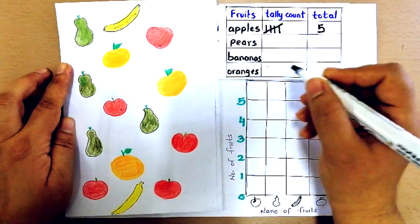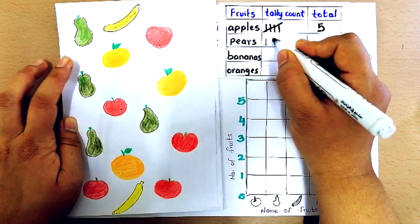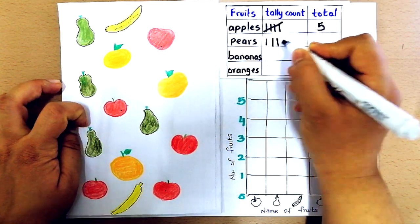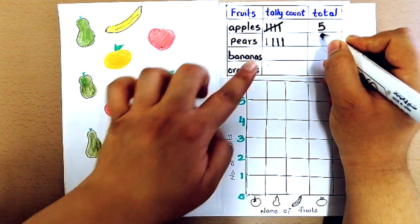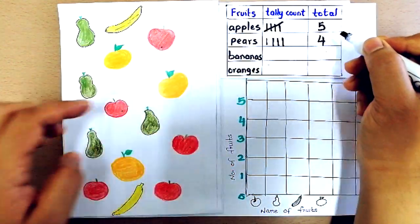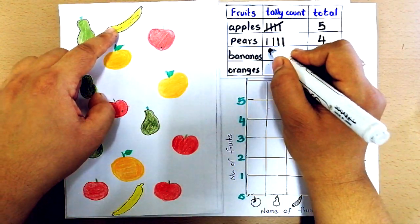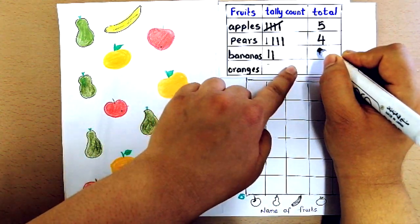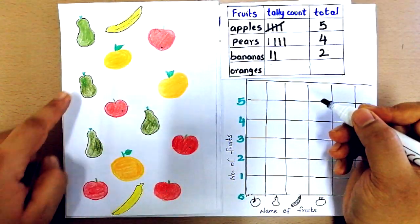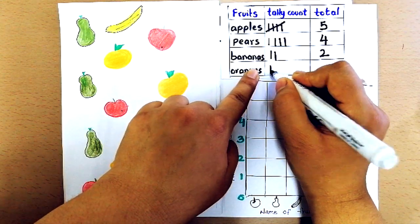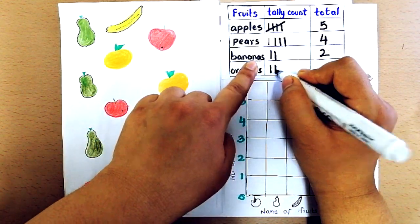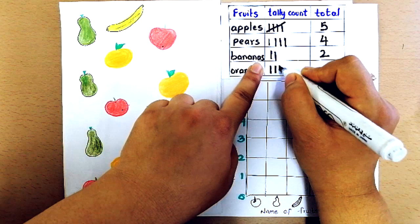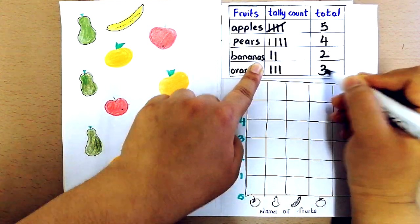For pears 1, 2, 3, 4 so let's write 4 here. Bananas 1, 2 so let's write 2 here. Oranges 1, 2, 3. Let's write 3 there.